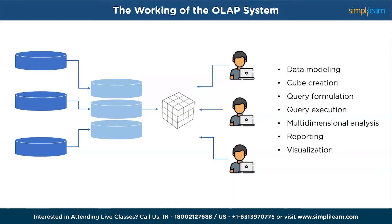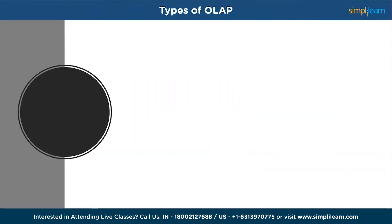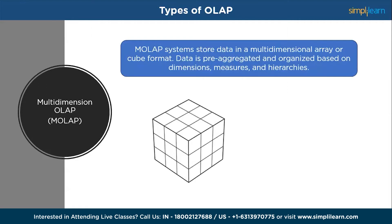The three main types of OLAP systems are designed to cater to specific analytical needs. First, Multidimensional OLAP, or MOLAP, stores data in a multidimensional array or cube format. Data is pre-aggregated and organized based on dimensions, measures, and hierarchies. MOLAP offers fast query performance and supports complex calculations. It is suitable for financial analysis, sales forecasting, and budgeting. However, MOLAP may face challenges with scalability when dealing with large datasets.